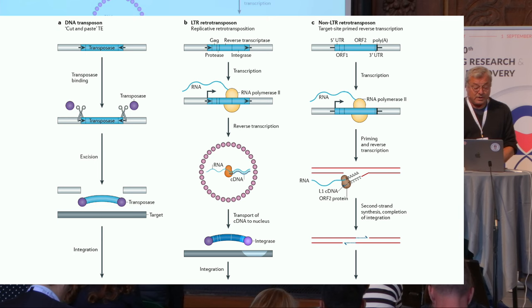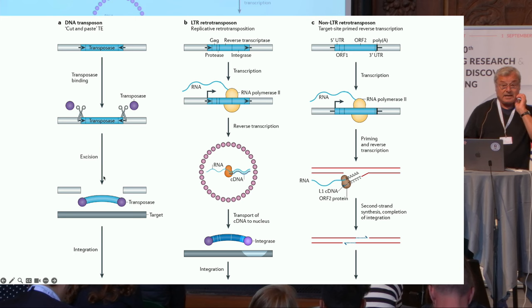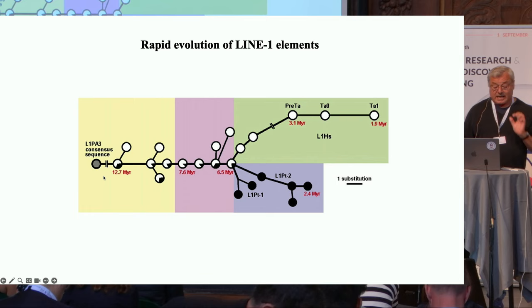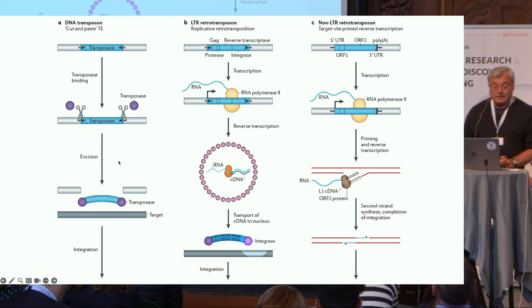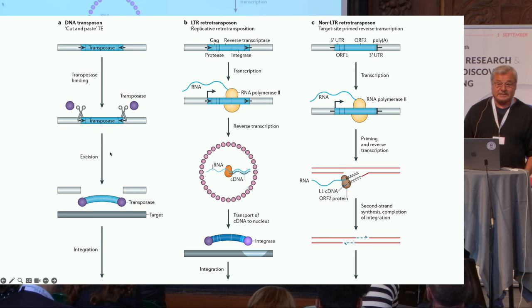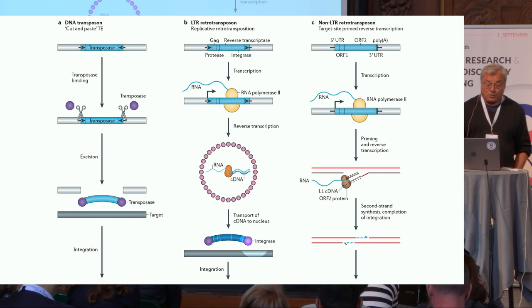Transposable elements come in multiple varieties. We are all familiar with the DNA transposons that move around by a copy-and-paste mechanism. These happen to be kind of extinct in the human genome. About 7% of our genome is derived from their sequences, but they're no longer active.